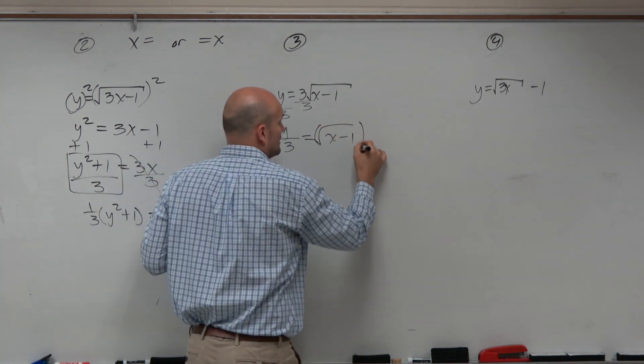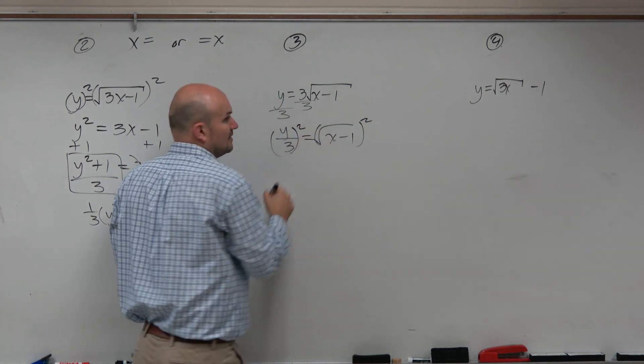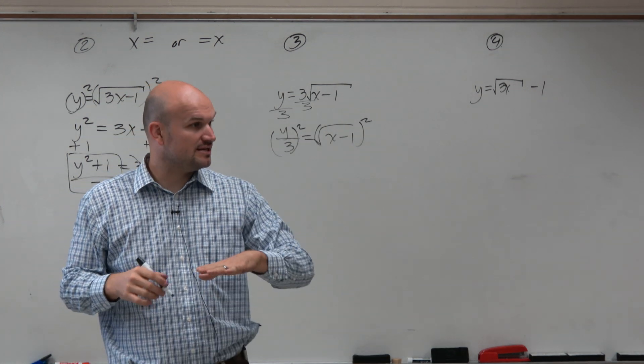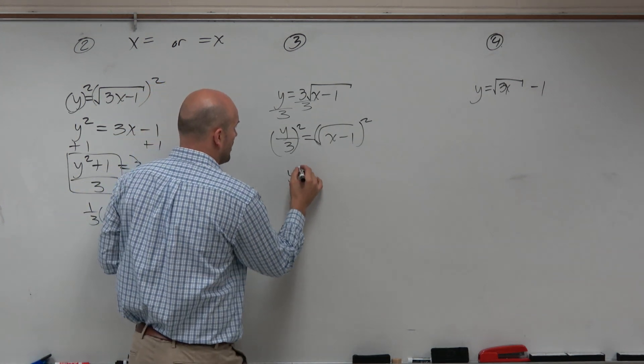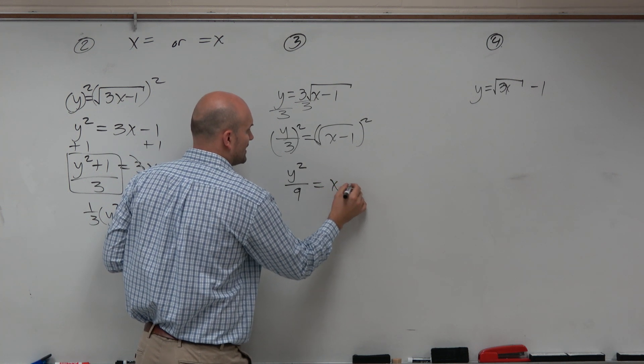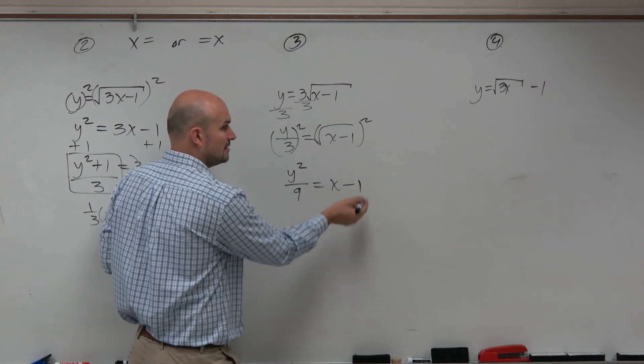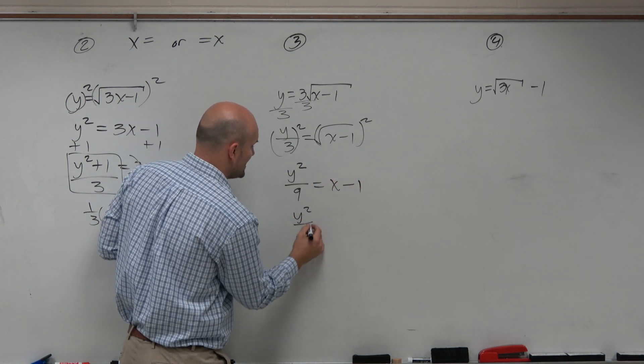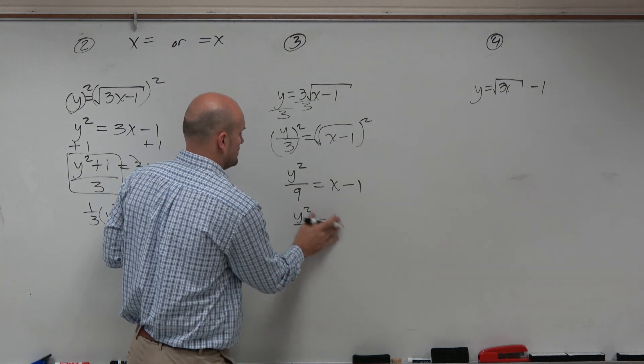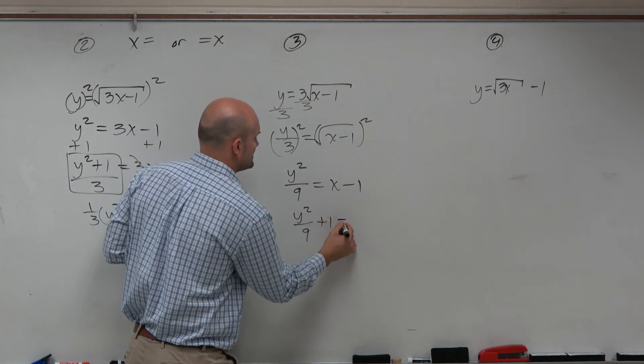So we have y over 3 is equal to the square root of x minus 1. Now, to your point, when I square both sides, I have y over 3 that's going to be squared, which is going to produce y squared over 9 is equal to the quantity x minus 1. And then I add the 1 to both sides, plus 1 is equal to an x.